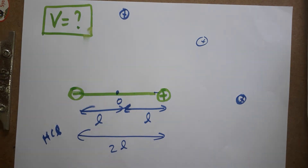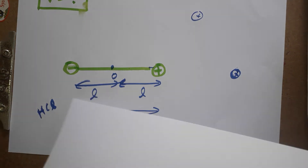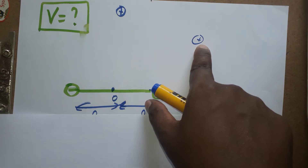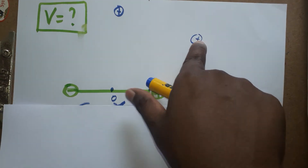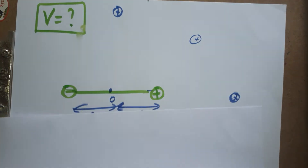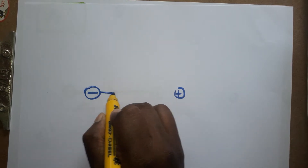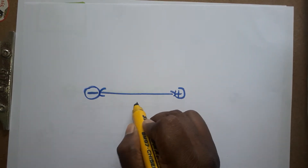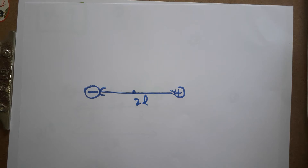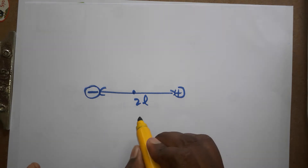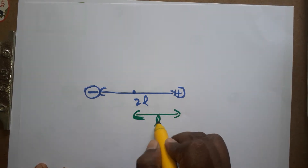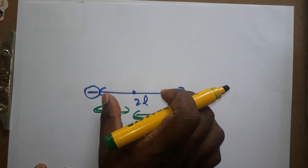First I am going to find the electric potential due to the electric dipole at any point. Based on that, I will derive the equatorial line and axial line cases. The electric dipole has a negative charge on one side and a positive charge on the other. The distance between the two charges is 2l, so from the center it is l on each side.